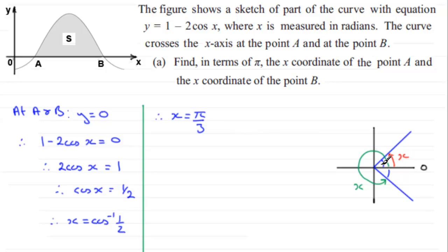OK, so that means that this little angle in here is 60 degrees or pi upon 3 radians. We'll mark it in as pi upon 3. OK? And that means that this one in here has to be pi upon 3.